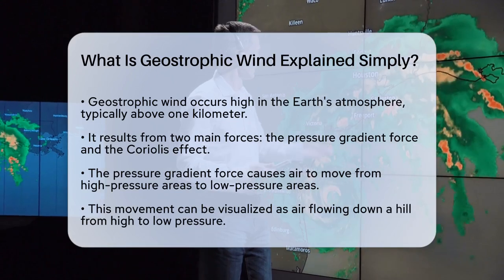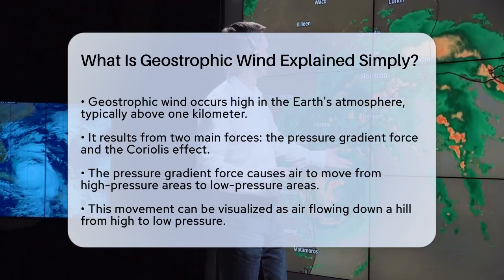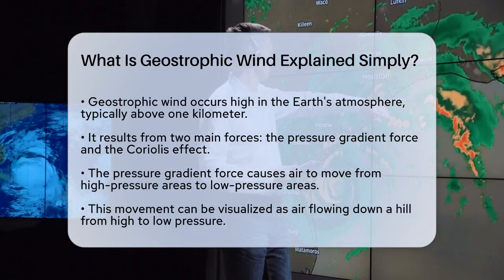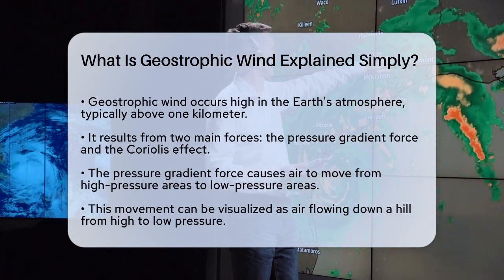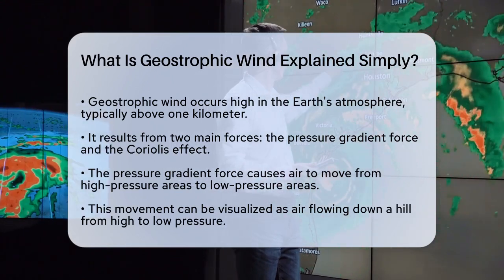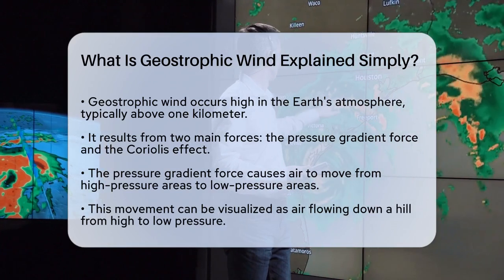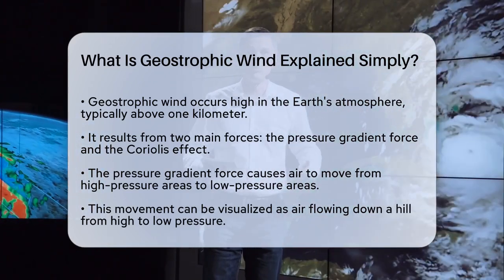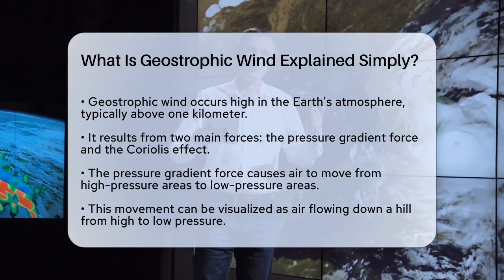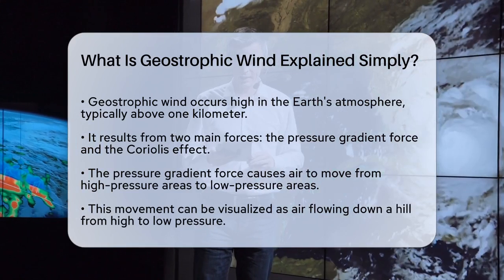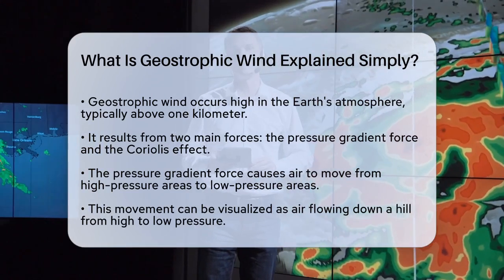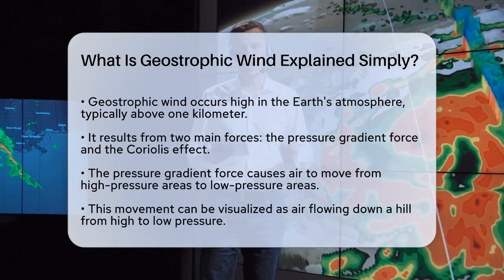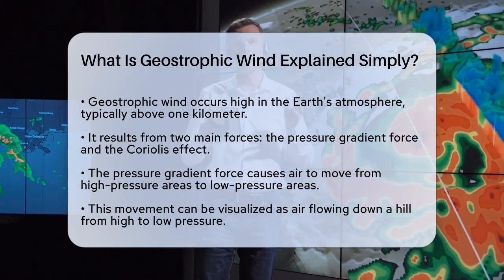Geostrophic wind is a type of wind that occurs high up in the Earth's atmosphere, typically above a kilometer from the surface. It's the result of two main forces: the pressure gradient force and the Coriolis effect.